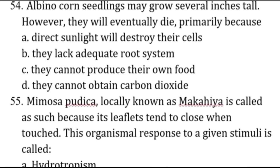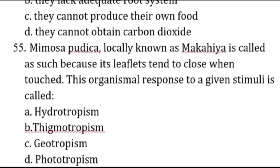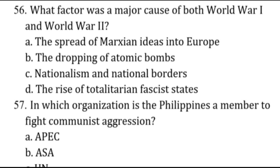Mimosa pudica, locally known as makahiya, closes its leaflets when touched. This response to a stimulus is called thigmotropism — the bending of plant parts in response to touch. Other tropisms include phototropism (sunflowers following sunlight), geotropism (roots going into soil), and hydrotropism (aquatic roots seeking water).